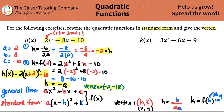Now let's do the same thing for the one on the right: k of x equals 3x squared minus 6x minus 9. Just like before, we always have to start by listing our a, b, and c values. My a value is 3, my b value is negative 6 — remember this is the same as plus a negative 6 — and c is negative 9.